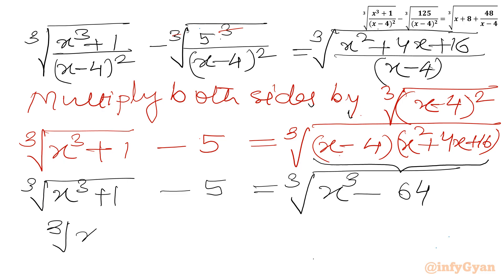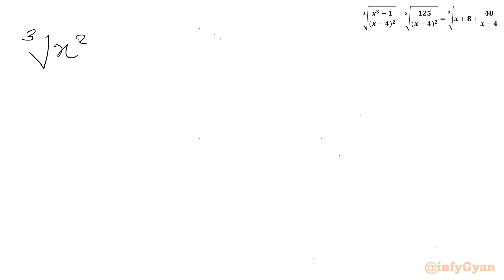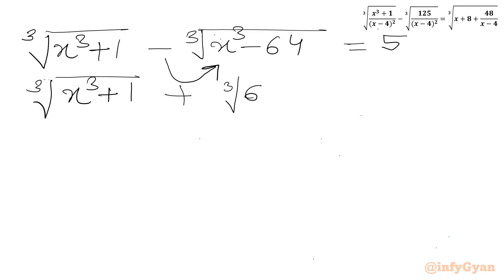LHS is cube root of x³ + 1 minus 5. After rearranging the terms, I can write: cube root of x³ + 1 minus cube root of x³ minus 64 equals 5. Taking the minus sign into the radical: cube root of x³ + 1 plus cube root of 64 minus x³ equals 5.